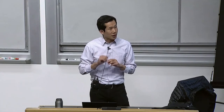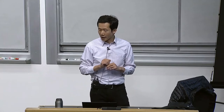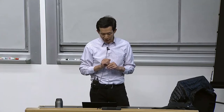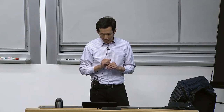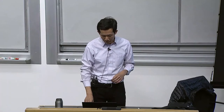Today we're going to focus on how to compute these arbitrary inference queries efficiently. I'll start with forward-backward and particle filtering, which specialize to Bayesian networks called HMMs — Hidden Markov Models. Then we'll look at Gibbs sampling, which is a much more general approach.